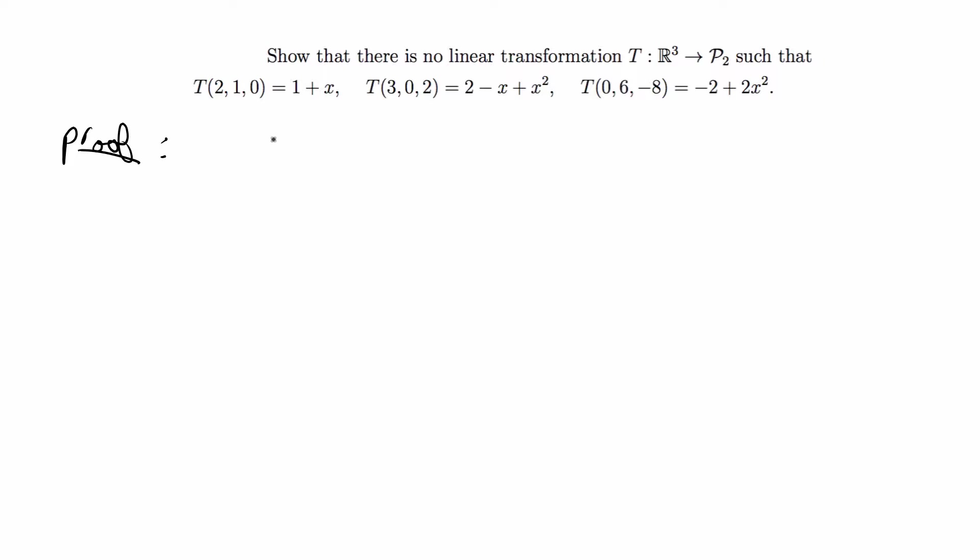Hey guys, in this video I'm going to do another linear algebra proof. This one says show that there is no linear transformation T from a three-dimensional real number to a second-order polynomial such that—and then it gives three examples of transformations, so we have to basically prove that these transformations are not linear transformation.